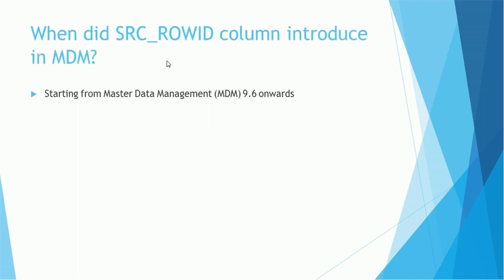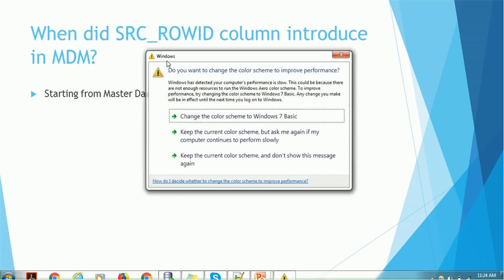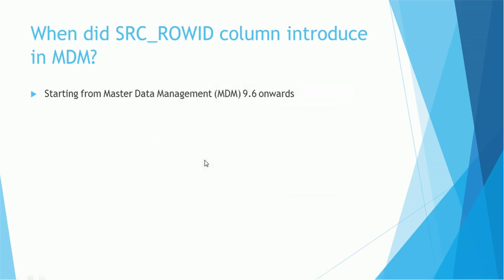When was the source row ID column introduced in MDM? This is relatively recent — the source row ID column functionality was not available from the very beginning of this product. When the product came to Informatica, they started adding new functionalities. When the MDM version reached 9.6, the source row ID column was introduced. Currently we are running MDM 10.2 and higher versions will follow, but MDM 9.6 is the start of the source row ID column.